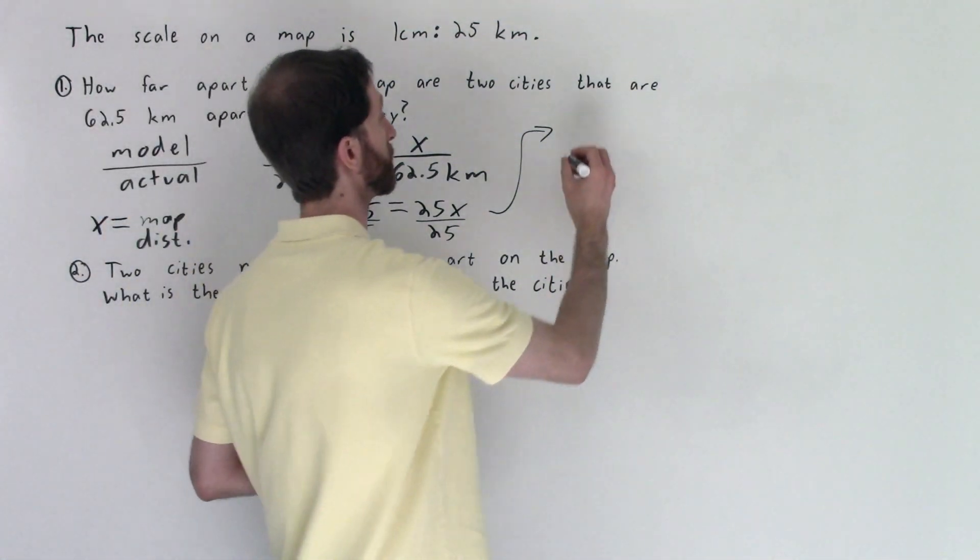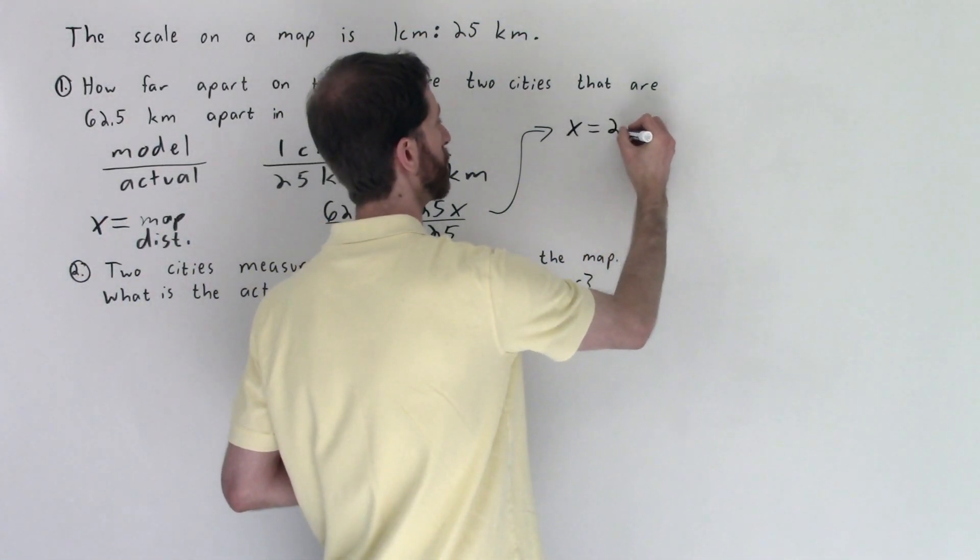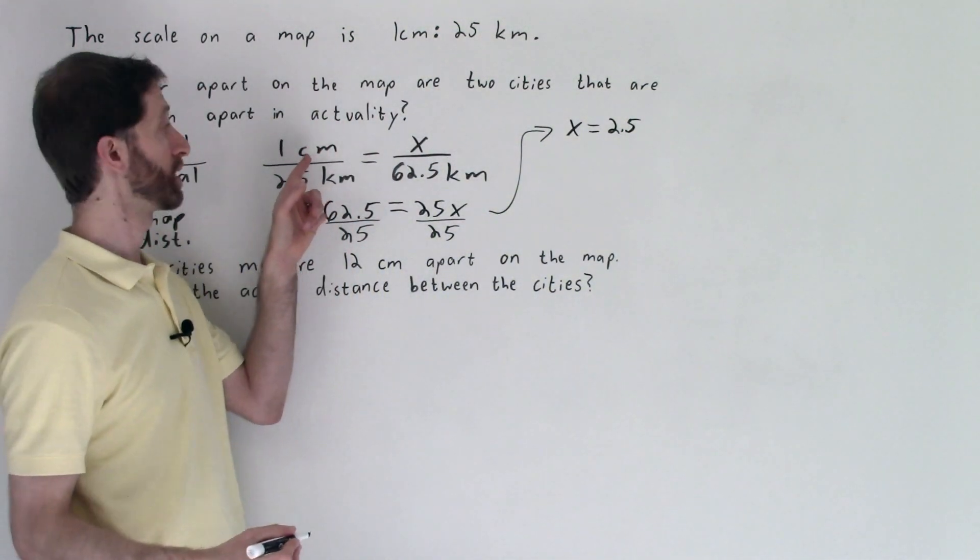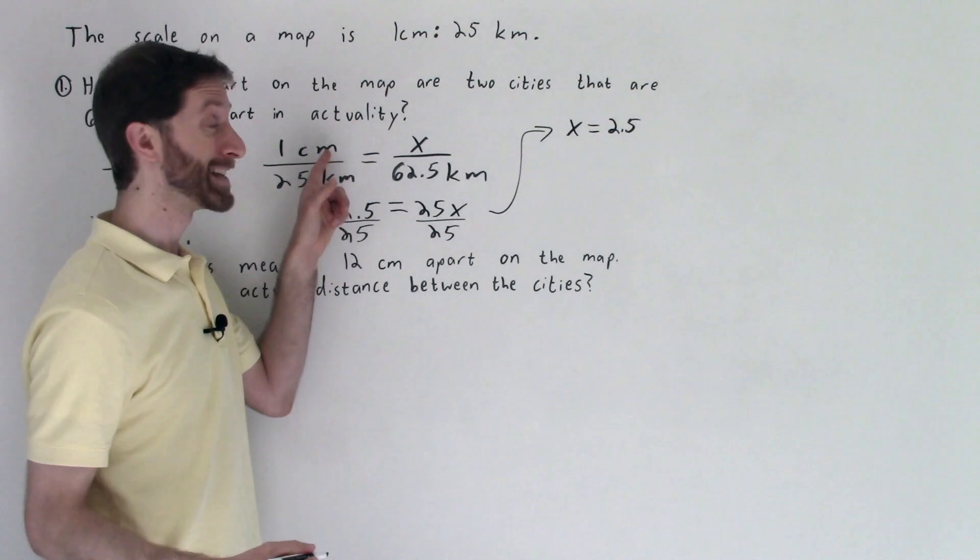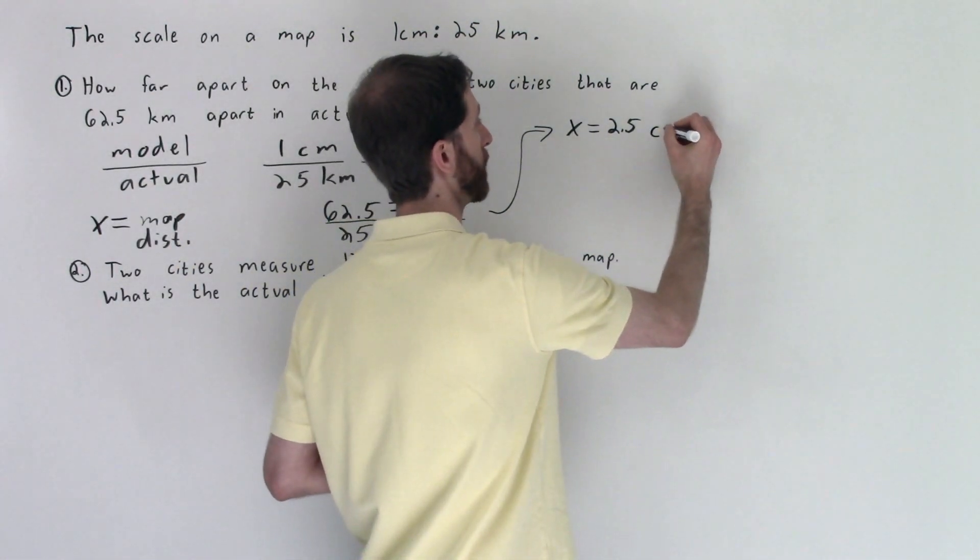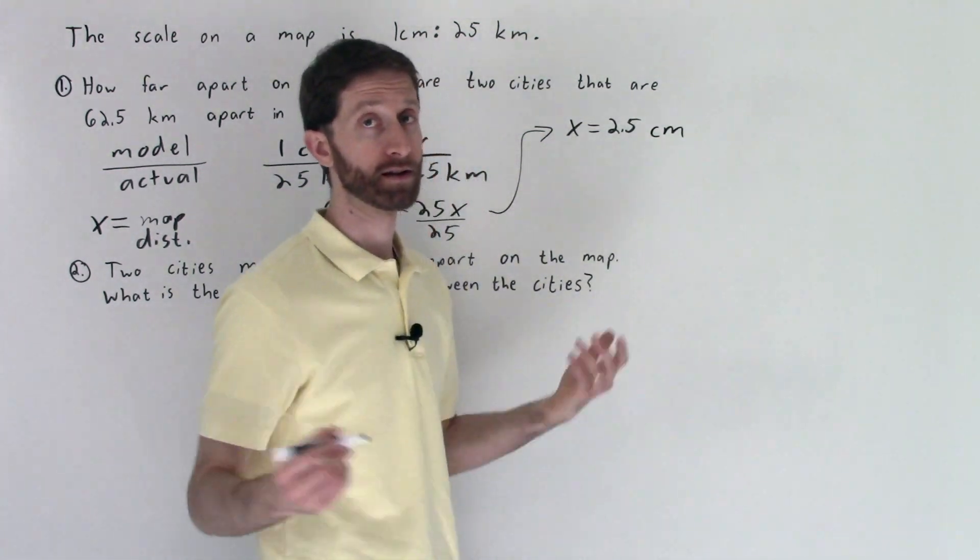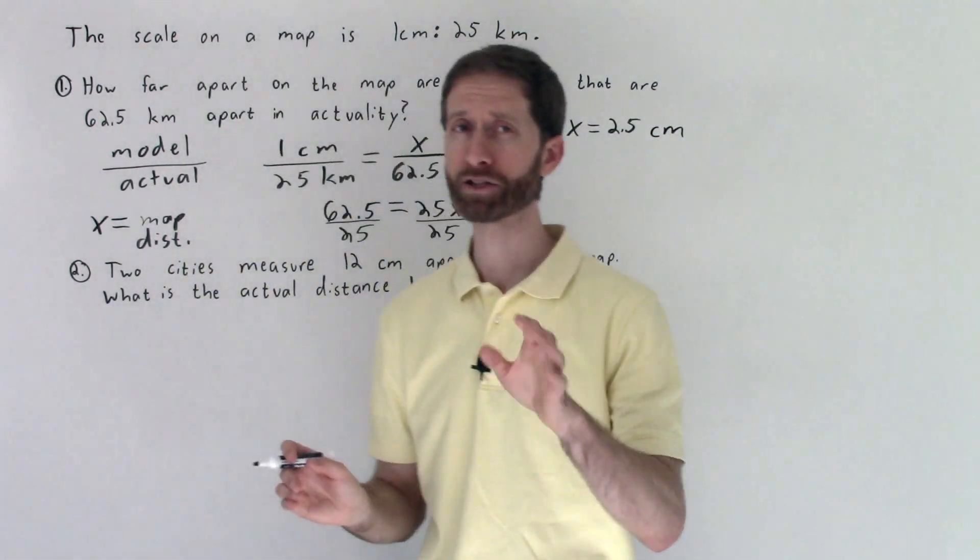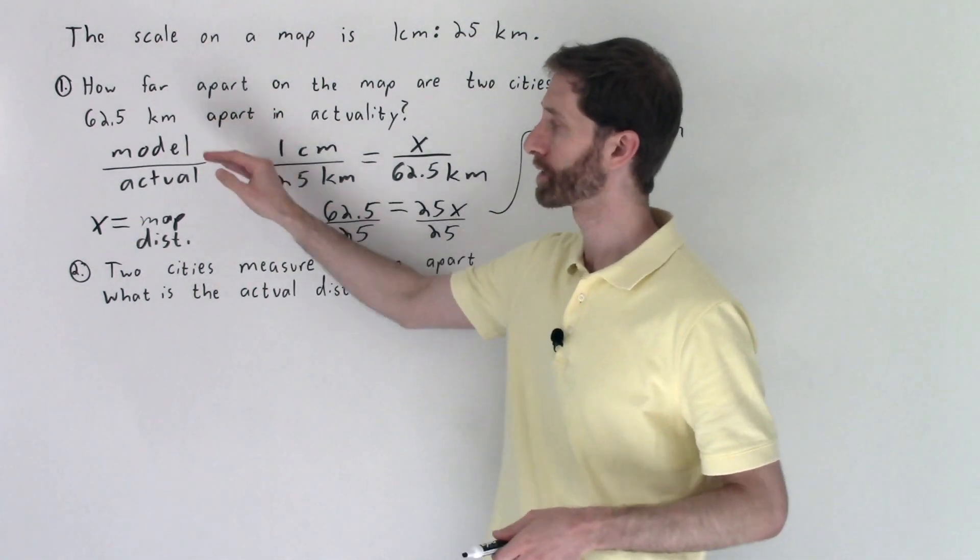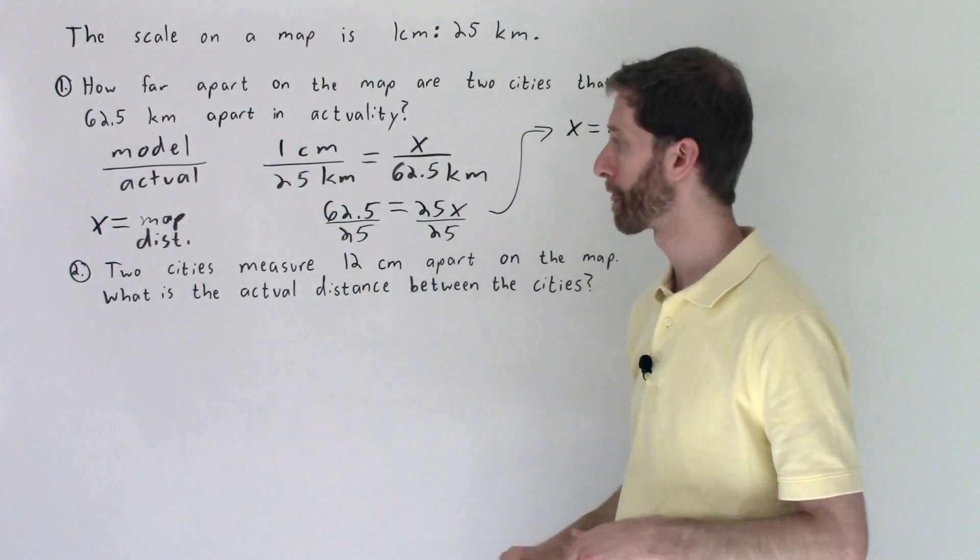62.5 divided by 25 ends up being 2.5. So x is equal to 2.5, and 2.5 what? Well if you look at this proportion we see that it'd be 2.5 centimeters because we're doing centimeters to kilometers here. So 2.5 centimeters and that's the distance on the map.